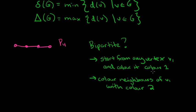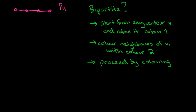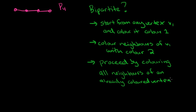You can sort of see intuitively what you're trying to do here. What you're trying to do is build the two partite sets to see whether or not this is actually bipartite. And one partite set will be one color, and the other partite set will be the other color. But you don't stop there. You have to continue this. So proceed by coloring all the neighbors of an already colored vertex with the opposite color.